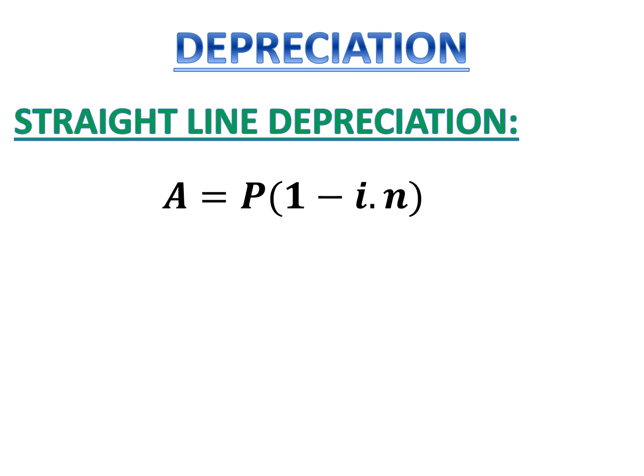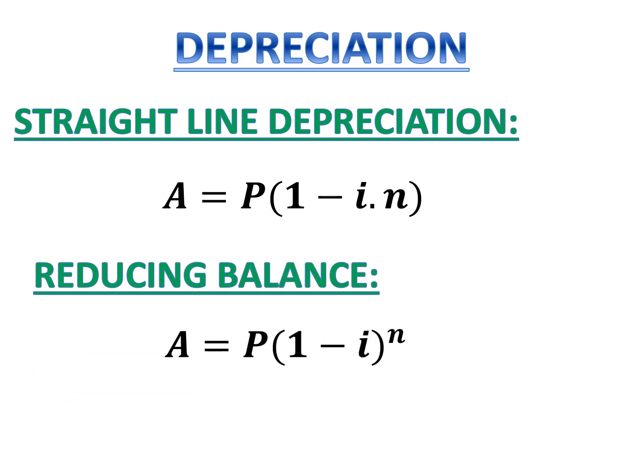And then the more common method of depreciation is depreciation on a reducing balance, and that is where your n is in the exponent. So it's A equals P bracket one minus i to the power of n.